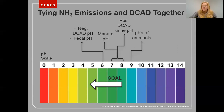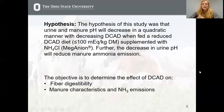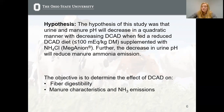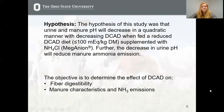So that's where this research aims to go, with the hypothesis that urine and manure pH will decrease in a quadratic manner with decreasing DCAD when fed a reduced DCAD diet. Further, the decrease in urine pH will reduce manure ammonia emissions. The objective of this abstract presentation is to determine the effect of DCAD on fiber digestibility, manure characteristics, and manure ammonia emissions.